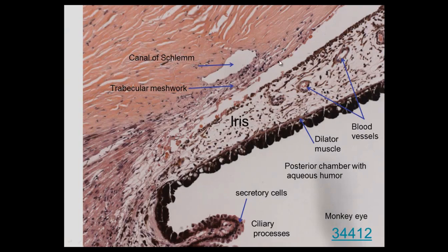Here's a canal of Schlemm, trabecular meshwork, and another view. This is an iris — we can see it has dilated muscle and pigmented cells. Blood vessels — remember the iris was part of the vascular layer of the eye. We have to have continuous capillaries to prevent antigens from entering, because there is a blood-aqueous barrier, so blood-borne components have a hard time getting through — we don't want them into the liquid of the eye.